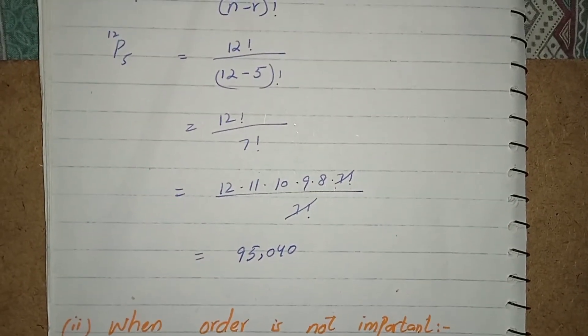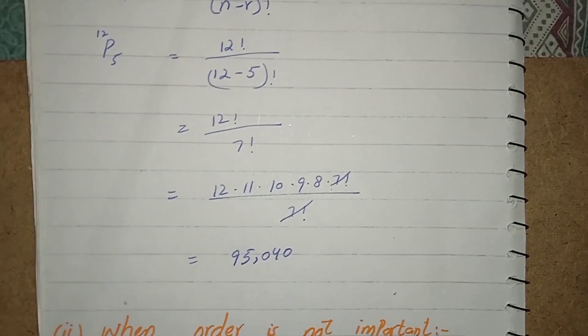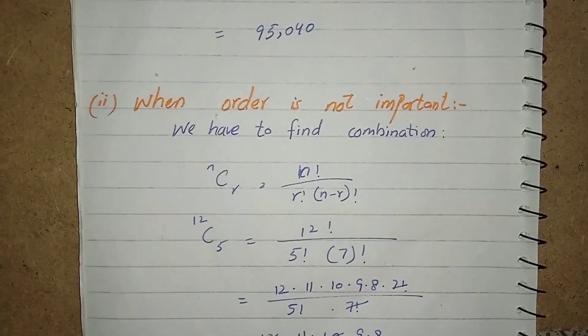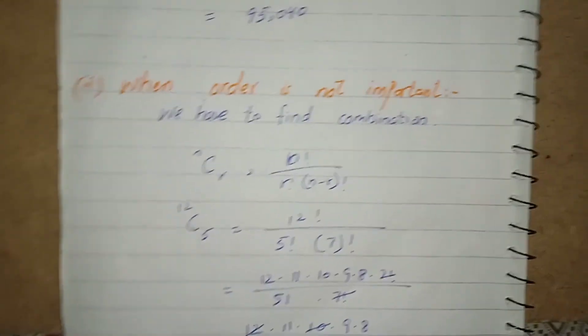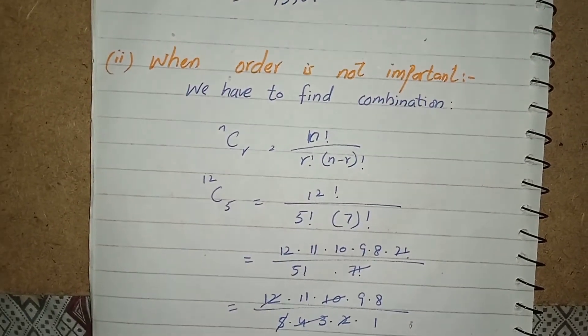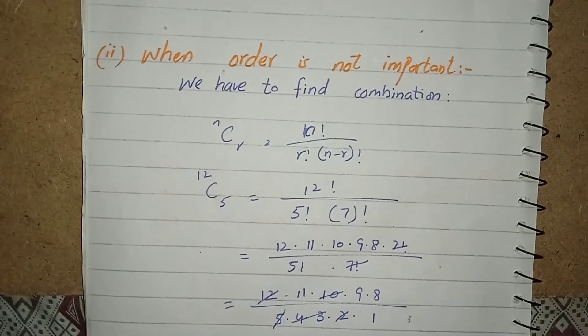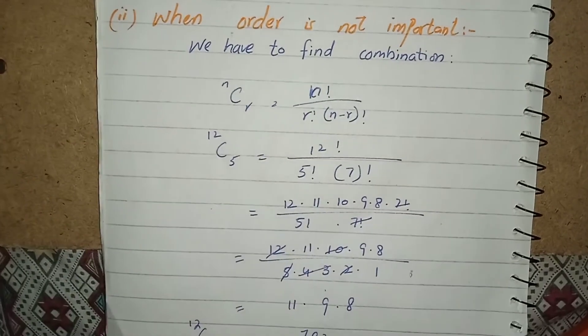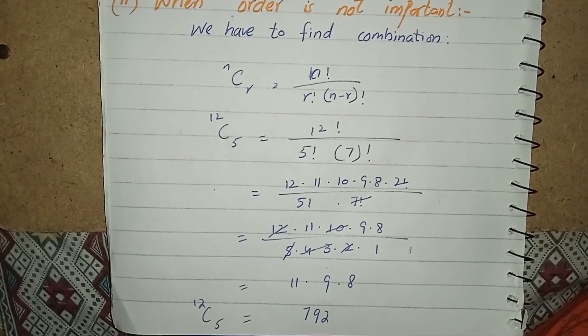And now let's move towards the second part of the question, where the order is not important. As I earlier told that when the order is not important to arrange the things, then we have to go with the combination. By applying its formula, I get the number of ways when the order is not important.